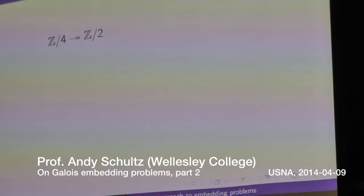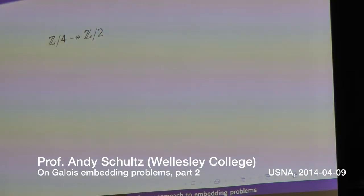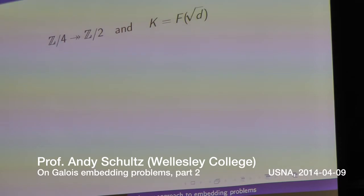Z4 has a natural map onto Z2. For the embedding problem, we assume that we already have an extension whose group is Z mod 2, and we already know extensions that have groups Z mod 2 look like adjoining the square root of something.